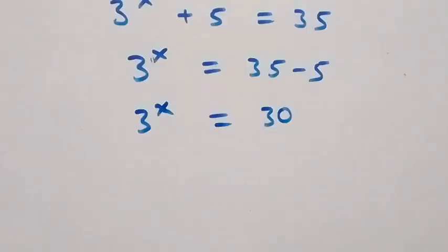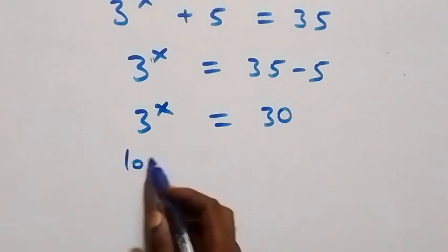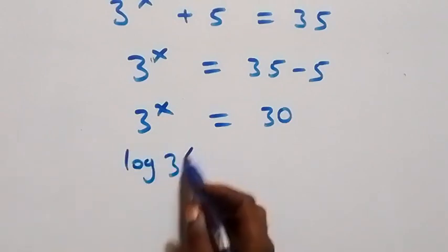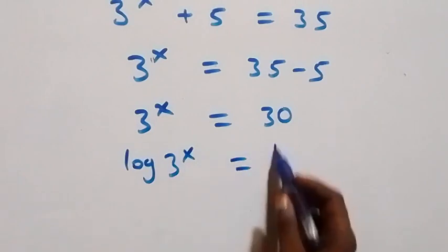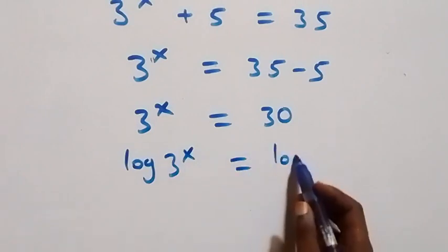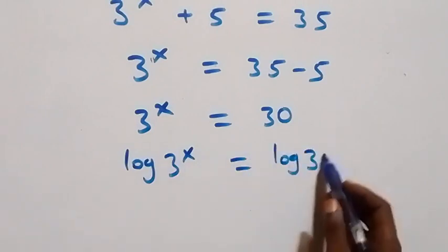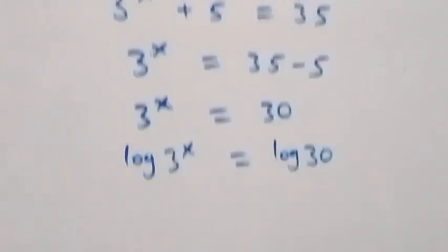The next step: we take the log on both sides. That is, log 3 raised to power x equals log 30.